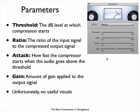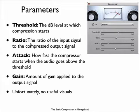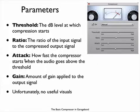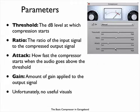Threshold is the decibel level at which the compression starts. When the audio signal reaches the set threshold, the compressor kicks in. It reduces the resulting signal by a given ratio, which is the ratio of the input signal to the compressed output signal. How fast the compressor starts when the audio goes above the threshold is determined by the attack parameter, and the gain of the resulting output signal is adjusted by the gain parameter. Unfortunately, in the Basic Compressor plugin for GarageBand, there are no other visuals other than the sliders to adjust these parameters.